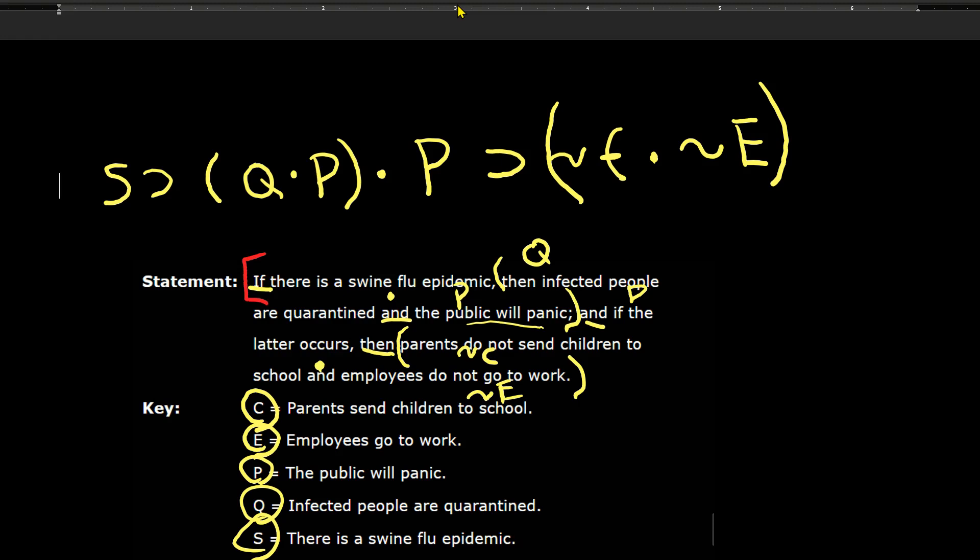If there is a swine flu epidemic, then the infected people are quarantined and the public will panic. And, so that will be my main connective, if the latter occurs, that's if P then not C and not E. So I am going to need some brackets to indicate that this is going to be taken as a whole. And now I'm left with nothing that's ambiguous. And if I check this in the MindTap, it should turn out to be correct.